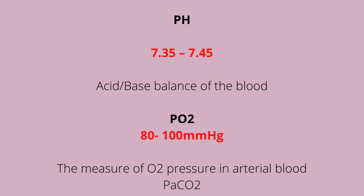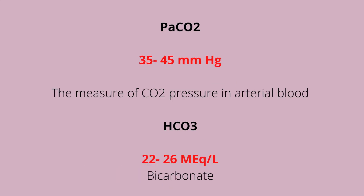Let's talk about ABG components and their parameters. The pH normal range is between 7.35 to 7.45, and it represents the acid-base balance of the blood — specifically the hydrogen ion concentration. Our PaO2 expected range is 80 to 100, and it measures the oxygen pressure in the arterial blood. The PaCO2 ranges between 35 to 45 and measures the carbon dioxide pressure in the arterial blood. The HCO3 ranges between 22 to 26 — this is bicarbonate, which is a buffer in the blood regulated by the kidneys.